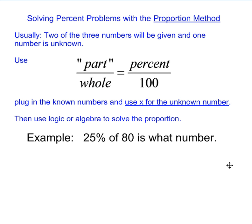The first example is 25% of 80 is what number. We're going to set up the proportion. x over 80 would be part over whole equals 25 over 100, which is percent over 100. And this one we can solve logically. 25 over 100 is 1 over 4. And in order to have this in the ratio of 1 over 4, x needs to be 20.